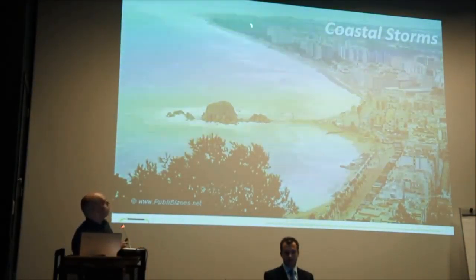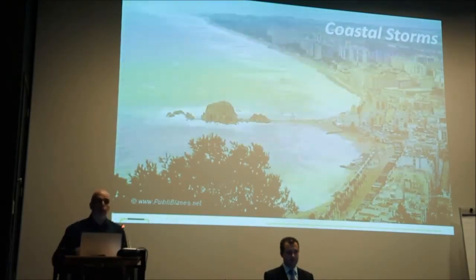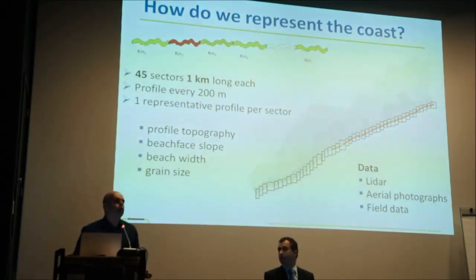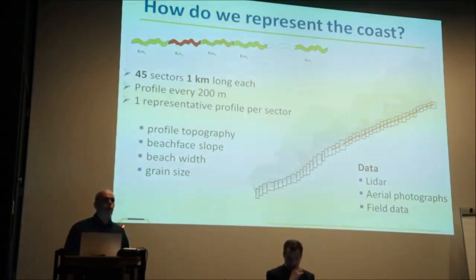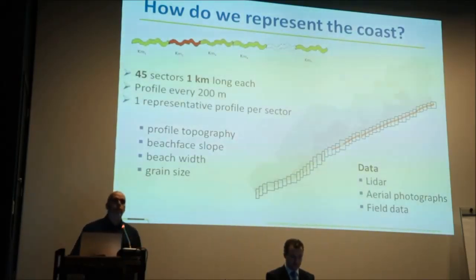As an example, this is our study site — the Tordera Delta. This is a storm that took place in December 2008, and here we can see what we are trying to look for: inundation and erosion. We chart the elements included in our tool to ensure objectivity, putting in a lot of data. To represent the coast and identify hotspots, we take sectors of one kilometer each, with one profile every 200 meters.